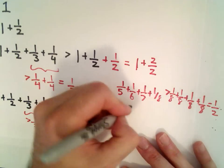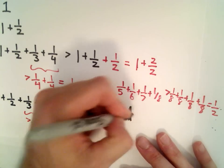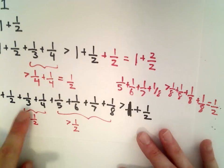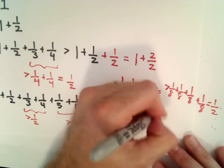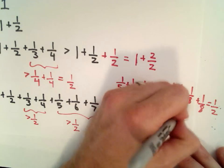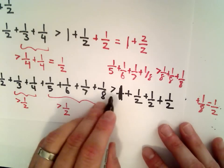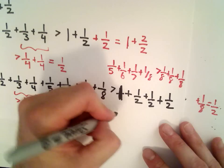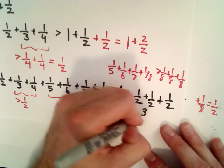Let's write this out. This is 1 plus 1 half. We said a third and a fourth is larger than 1 half, and these last four terms are also larger than 1 half. So 1 plus 1 half plus 1 half plus 1 half, that's going to be 1 plus 3 over 2.